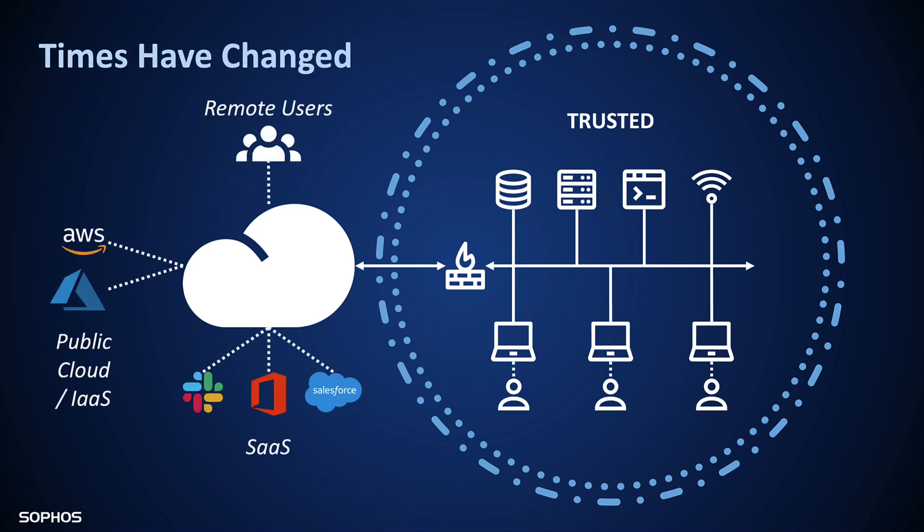But of course, times have changed, particularly over the last couple of years. This perimeter has eroded. Users work remotely from untrusted networks that may or may not be protected with any kind of firewall. The use of SaaS apps, cloud platforms, and services leaves much of our data outside of the corporate perimeter — everything is everywhere. The old model just doesn't work anymore.